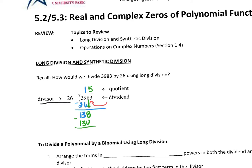Same process — we subtract. Then we bring the next one down and say how many times will 26 go into 83? 26 will go into 83 three times. We do 3 times 26, which is equal to 78. We subtract: 83 minus 78 equals 5. Because 26 can't go into 5, this 5 is what we call our remainder.